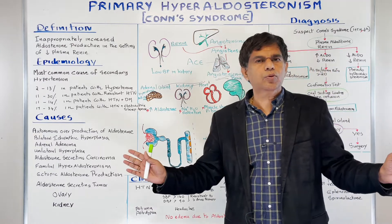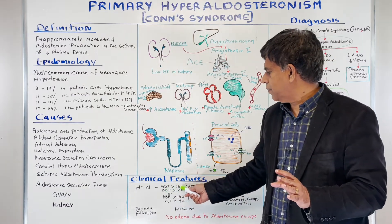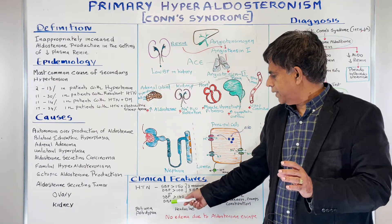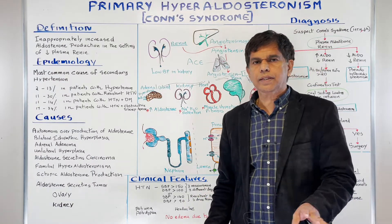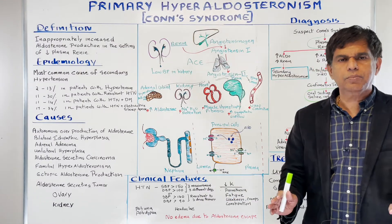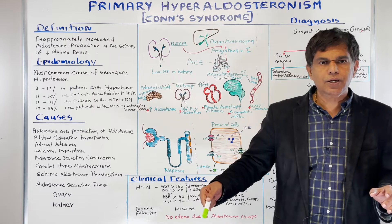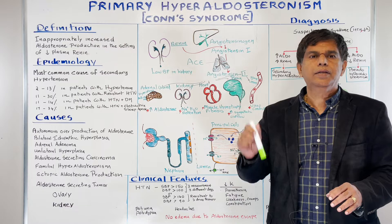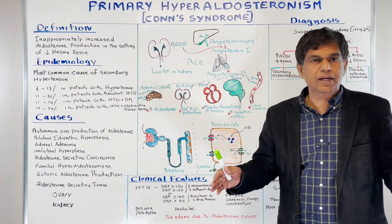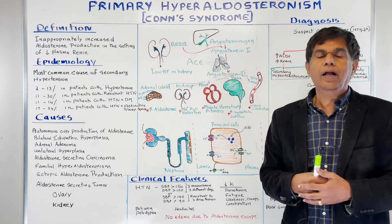Now let's look at the clinical features. Number one is hypertension: systolic blood pressure greater than 150 and diastolic greater than 100 on three measurements on three different days, or systolic greater than 140 and diastolic greater than 90 resistant to three drugs. Patients can also have polyuria, polydipsia, and headache. Regarding potassium: it goes down because of the sodium-potassium pump, resulting in hypokalemia, causing paresthesia, muscle weakness, fatigue, muscle cramps, and constipation.